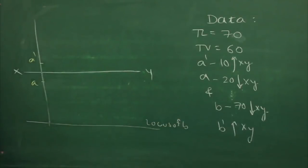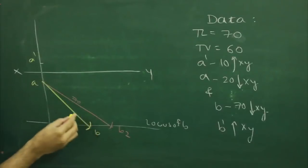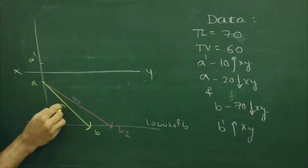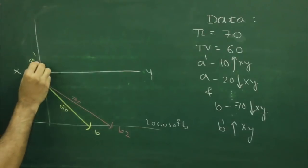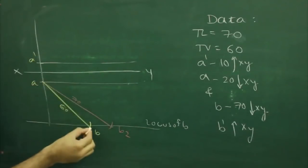Then we can cut the true length, that is AB2 which is given 70. And we can cut top view as well, that is 60. After that, we will draw B1.